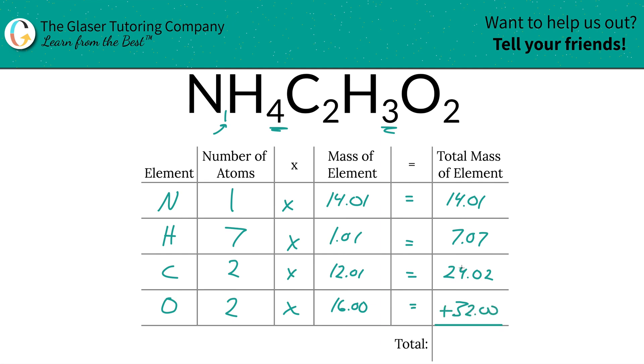Now to find the total mass of the entire compound, all you simply have to do is just add up all the total mass of each element. Look at how nice and simple that is: 77.10. And there it is - that was the first step of the process, finding the total mass.